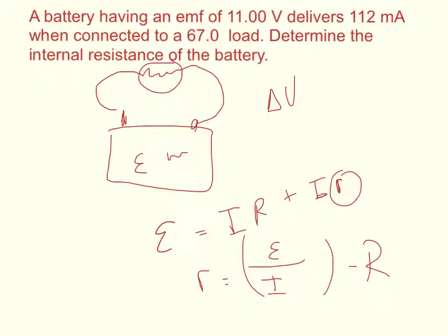The other thing to be careful of when plugging in your numbers is the current is in milliamps. You want to multiply that by 10 to the negative 3 to convert it to amps, and then you'll be able to get your resistance.